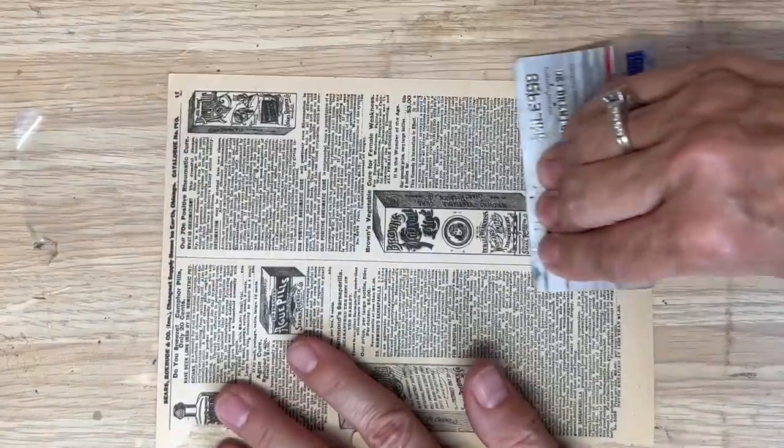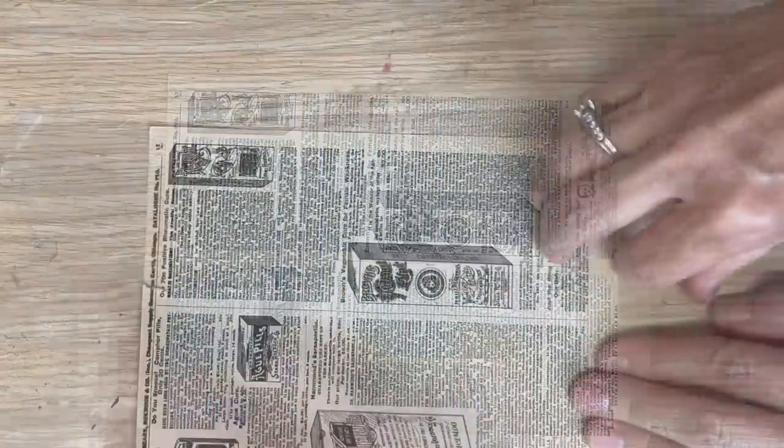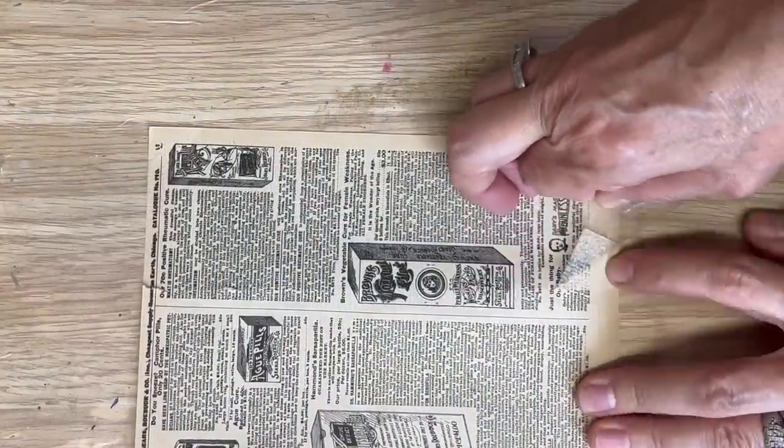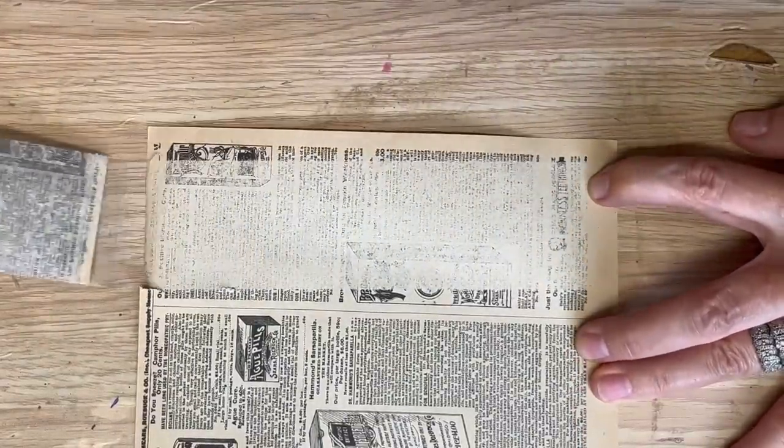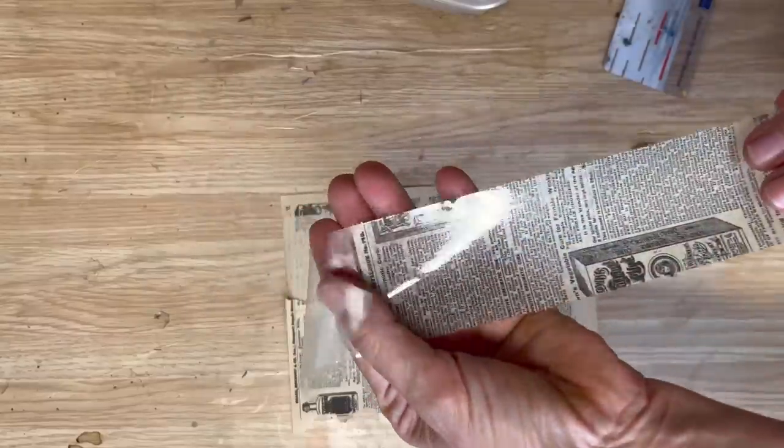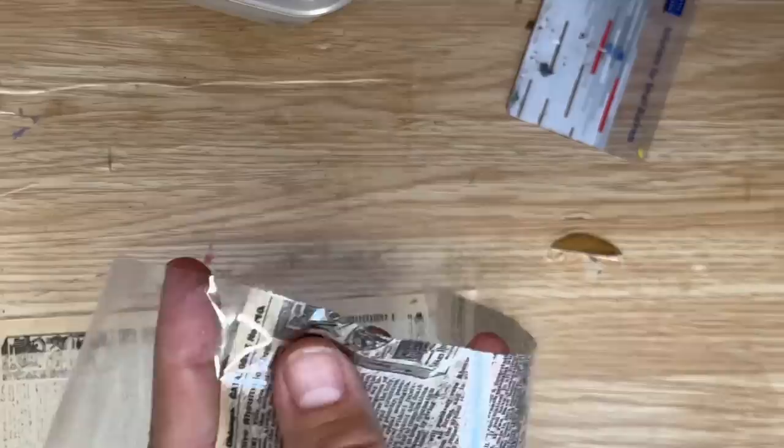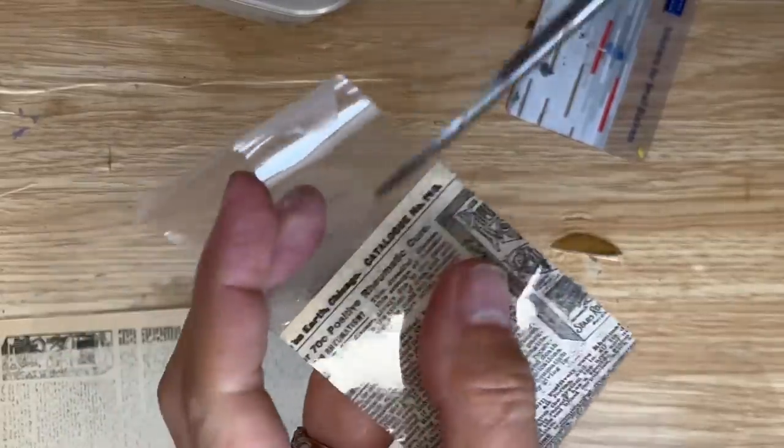Then you just peel off that packing tape and you're gonna be left with that top layer of paper on the tape. You can trim around the edges and you can add it to any of your mixed media projects or junk journaling. It's a really quick, fast way to transfer magazine papers onto packing tape.